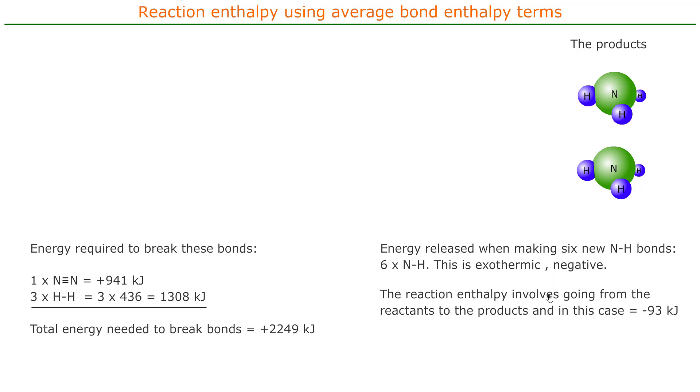And so we take the energy that's required to break the bonds and we add it to the energy released, which of course is negative, when we make the bonds. And we get the sum here, 2249 minus six times nitrogen-hydrogen bonds, because it's negative, equals negative 93, which is the reaction enthalpy. And then we simply rearrange that.